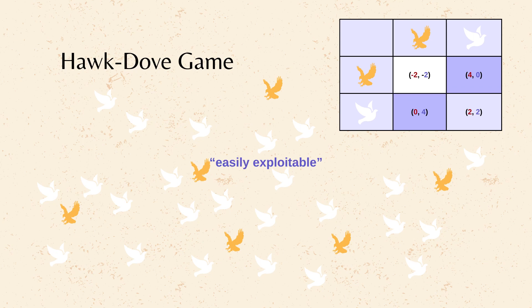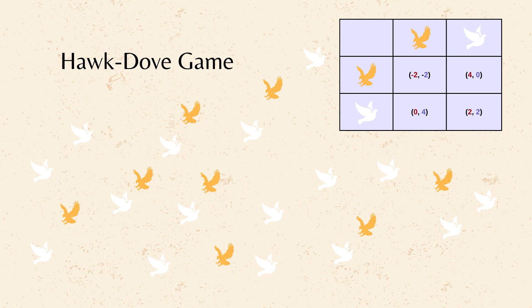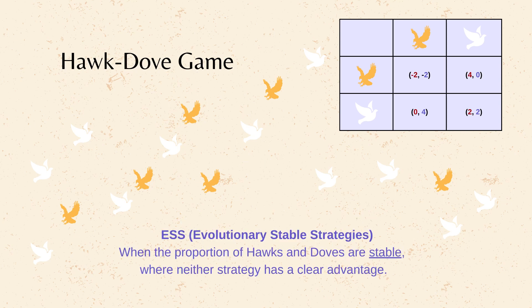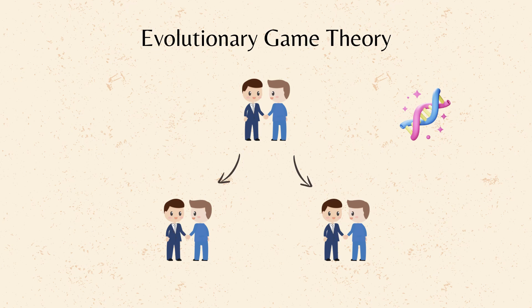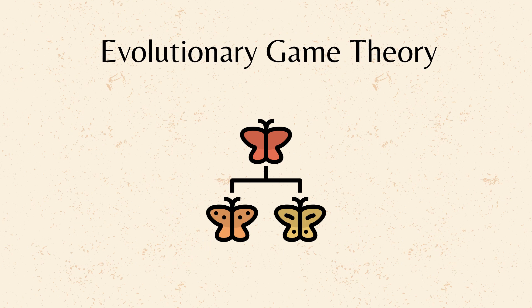Conversely, with too many doves, hawks can easily exploit them. This highlights how the best strategy depends on the prevalence of the other strategy. The concept of Evolutionary Stable Strategies states that when the proportion of hawks and doves reach a specific point, neither strategy has a clear advantage. This stable state discourages the invasion of alternative strategies. In evolutionary game theory, strategies for interacting with others, like cooperating and competing, are considered heritable traits. Natural selection states that organisms with traits better suited to their environment are more likely to survive and reproduce, passing those traits on to future generations. So by learning about evolutionary game theory concepts, we are able to further explore the essence of natural selection that acts as the engine driving the evolution of strategies within a population.